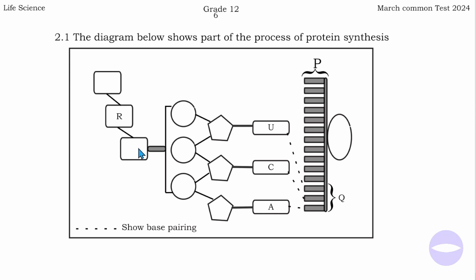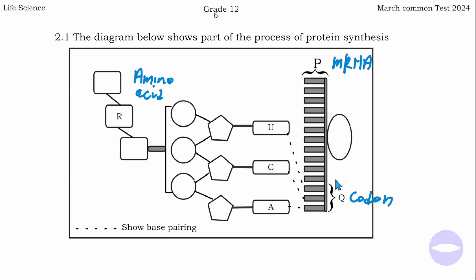These amino acids are bonding. Let me give the labels. R is amino acid. P is the messenger RNA, which is mRNA. Because this is the mRNA, three consecutive nitrogenous bases of an mRNA are called codons — so Q is codons, we call it a codon. Here we have uracil, because this is the tRNA.